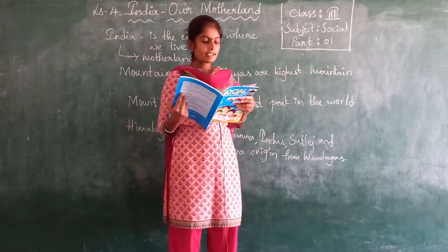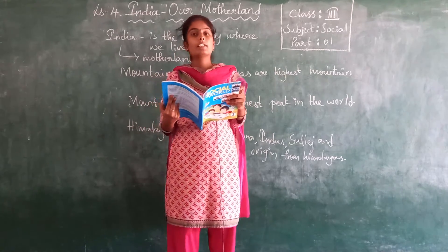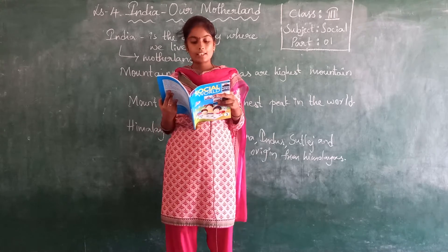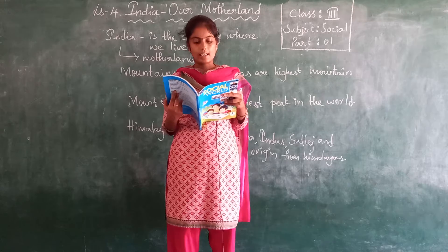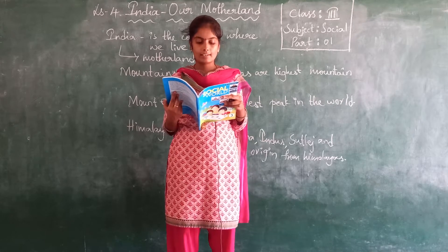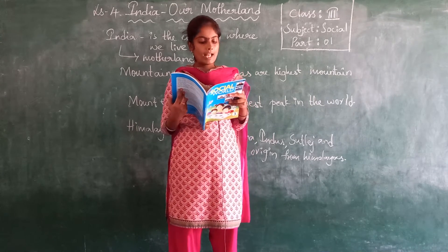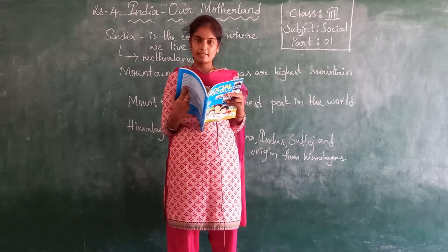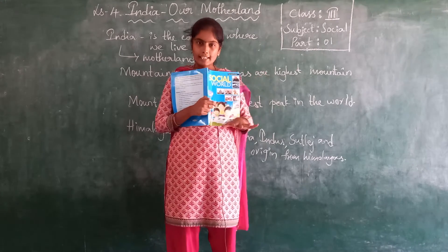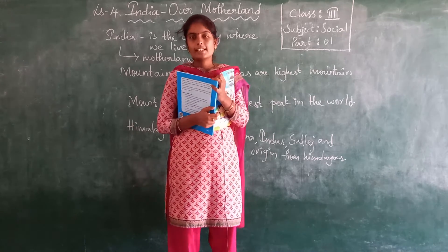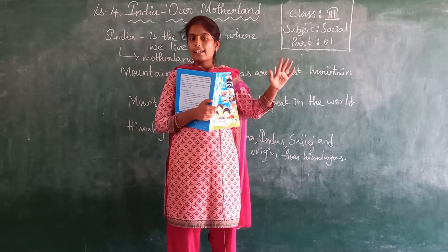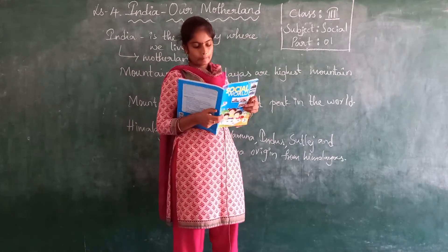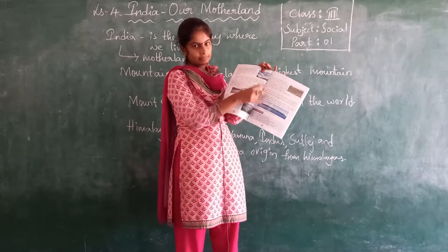There are mountain areas in the central and southern parts of India too. The Vindhya and Satpura ranges are in central India, while the Nilgiri Hills are in the south. But these mountain areas are not as high as the Himalayas. Towards the south you have Nilgiri Hills, and towards the center of India you have Vindhya and Satpura mountains. Here you can see the picture of the Himalayas.